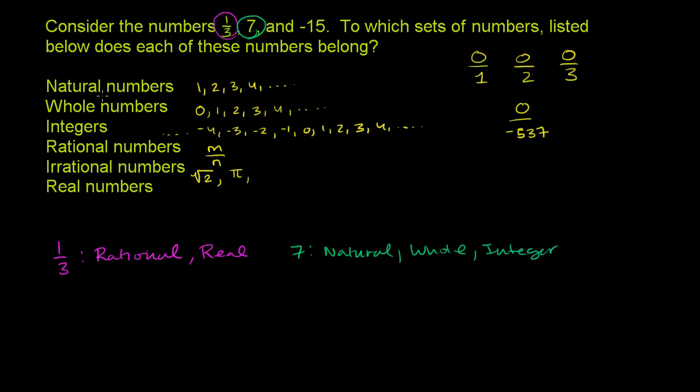And anything that is a natural number, a whole number, an integer is also going to be a rational number. And to see that, you can write 7 as 7 over 1. In fact, you can write any integer as that number over 1, which hopefully makes it obvious that that is also a rational number. And if it's rational, you can't be irrational, that literally means not rational. And then of course you're going to be real. It's going to be a real number.